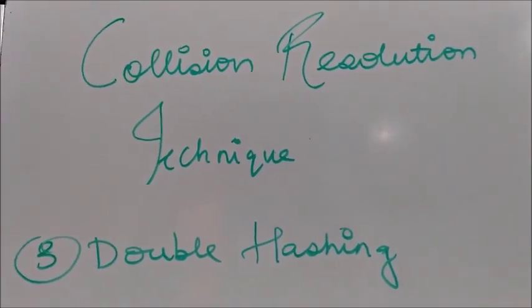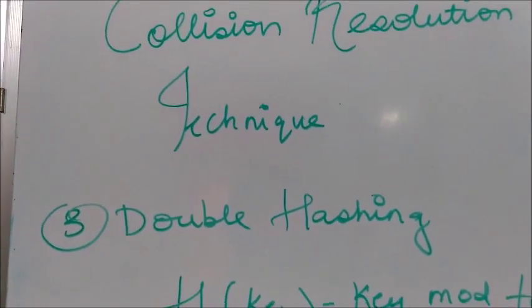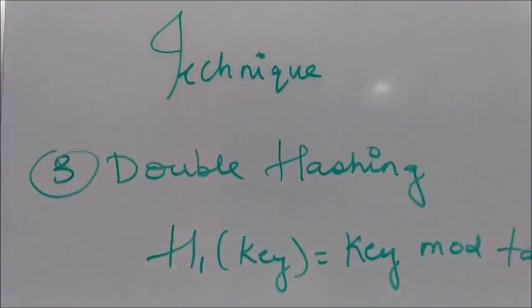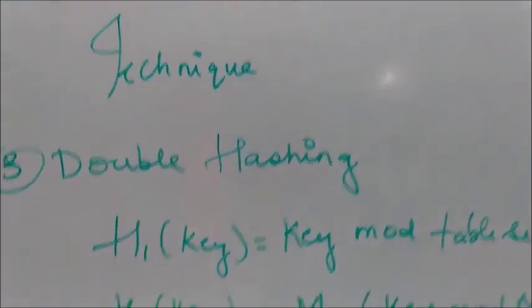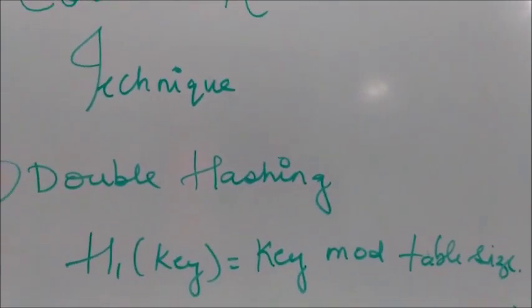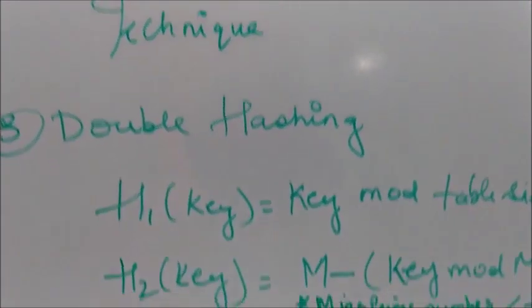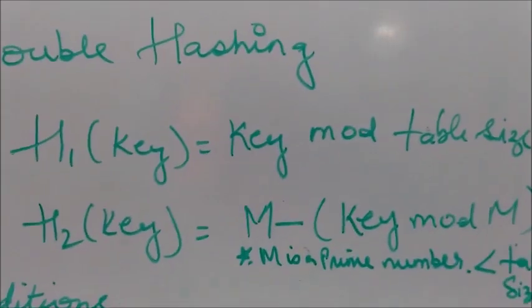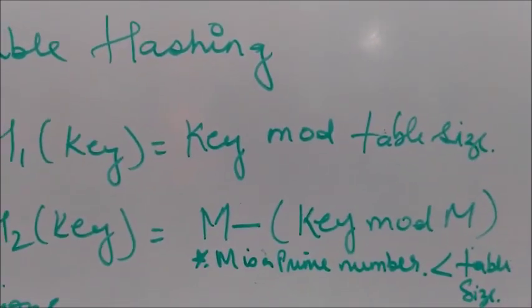The final technique in open addressing is double hashing. In double hashing we use two hash functions. The first function is like linear probing, h1(key) equals key mod table size. If collision occurs, then we apply the second hash function h2(key) equals M minus (key mod M), where M is a prime number less than table size.